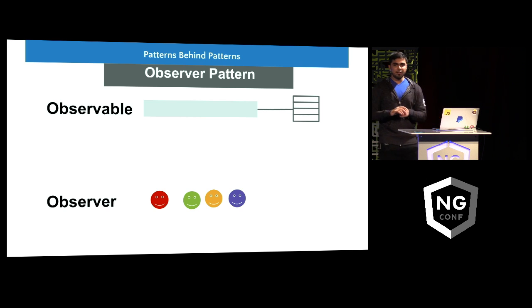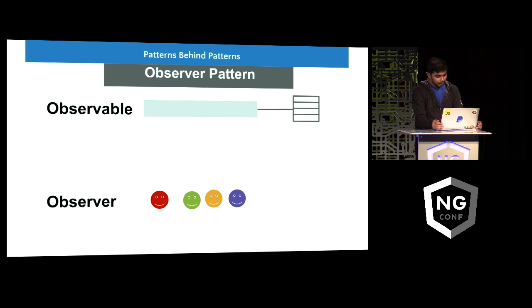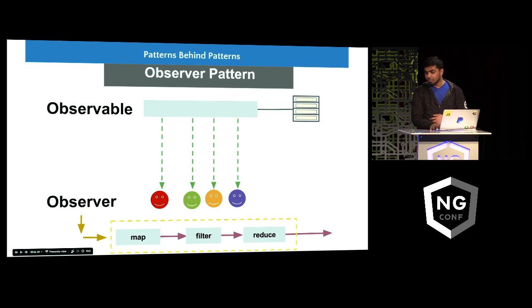Now before we go into this, observables are like scrums. Everybody has their own definition of it and everybody thinks that everybody else is wrong. So in the observer pattern, you have two constructs, an observable and an observer. To start with, an observer makes a request to the observable that, hey, send me some data whenever you have something. Now the observable maintains a list or somehow keeps track of all the observers and then there can be multiple observers. So an observable can emit values to its subscribers and it can be observed or subscribed to and subsequently unsubscribed from over time. Then we have an observer which can listen to an observable and receive data from observable and then generally apply some data manipulation pipelines on the received response.